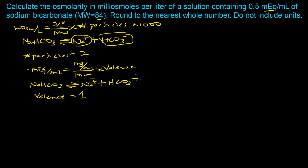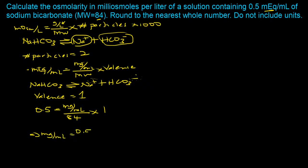Substituting the values into the milliequivalents equation: 0.5 milliequivalents per milliliter equals milligrams per mL divided by 84 (molecular weight) times 1 (valence). Solving for milligrams per milliliter gives 0.5 times 84 divided by 1, which equals 42 milligrams per milliliter.